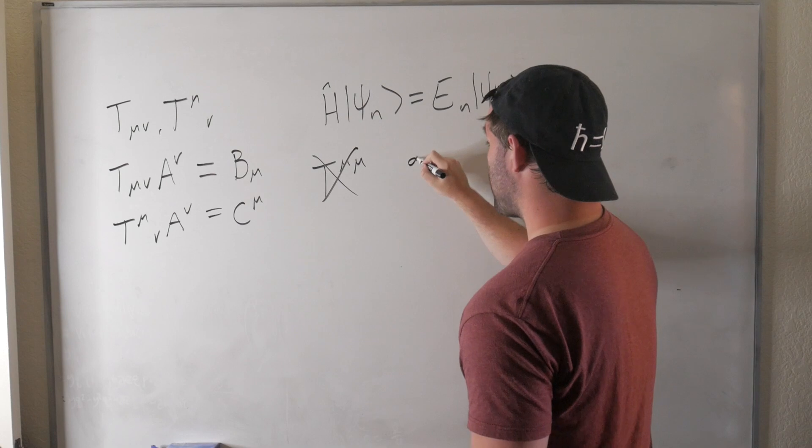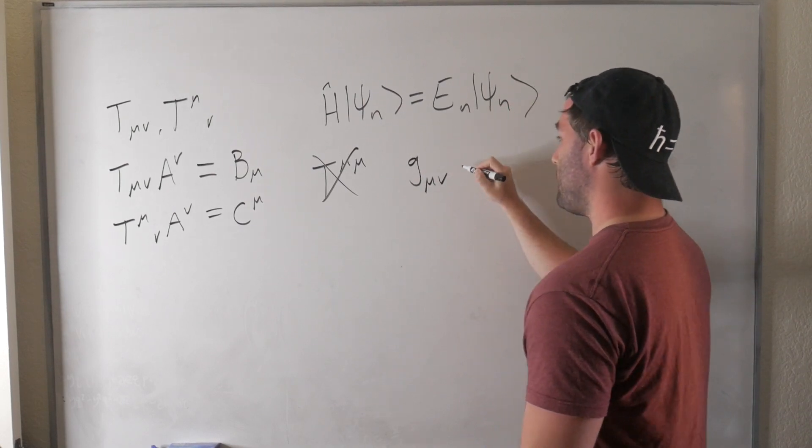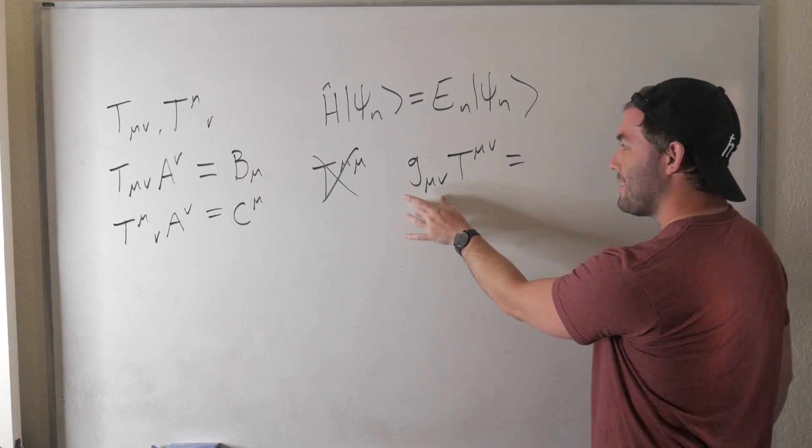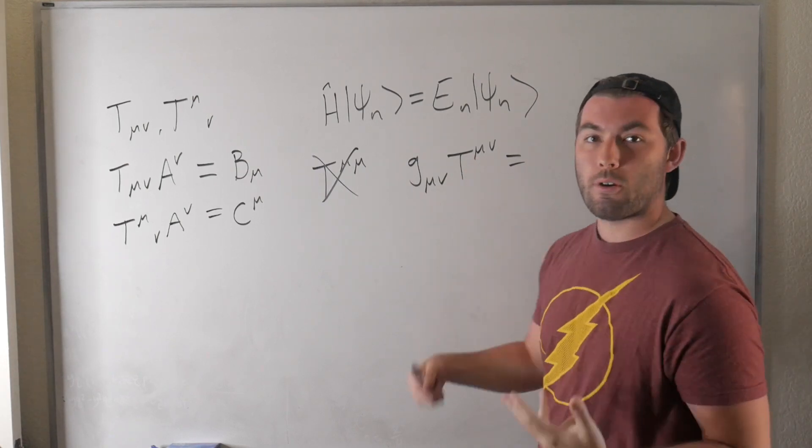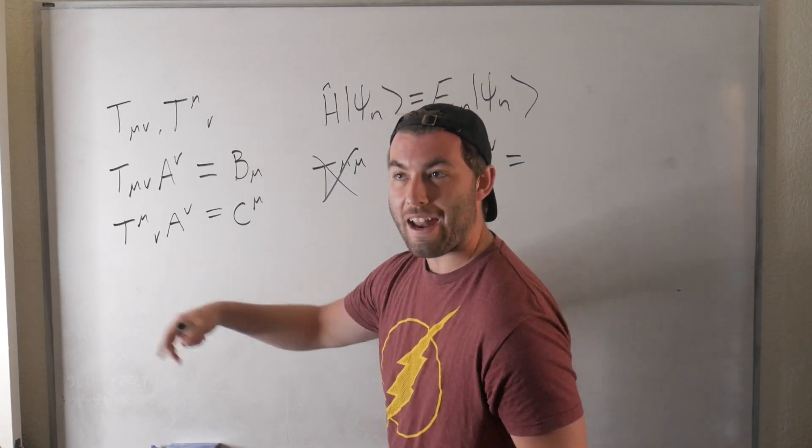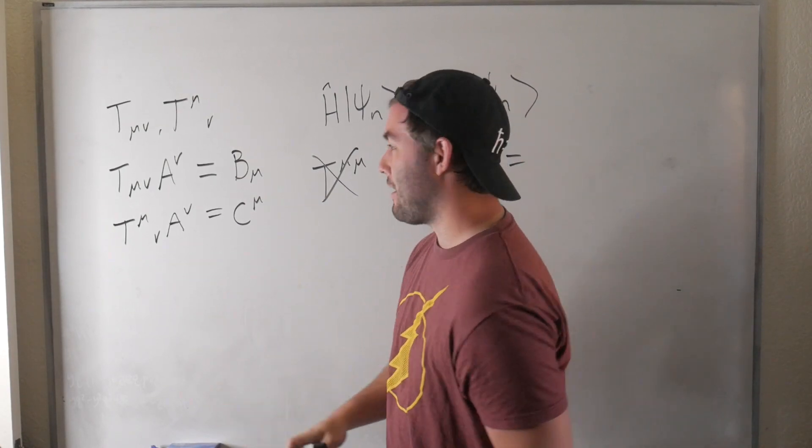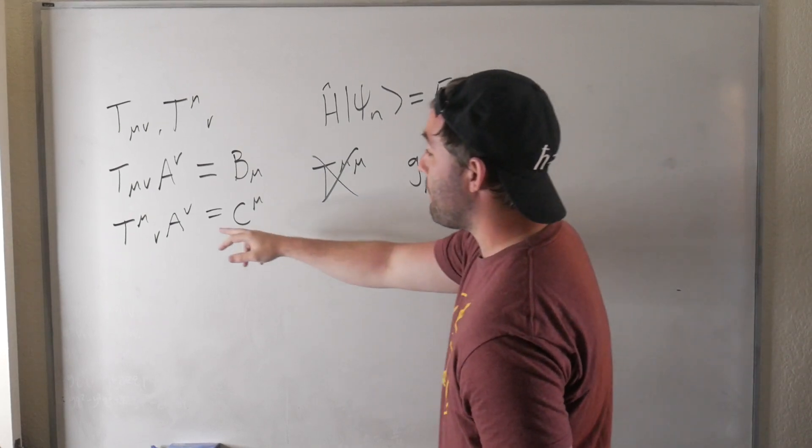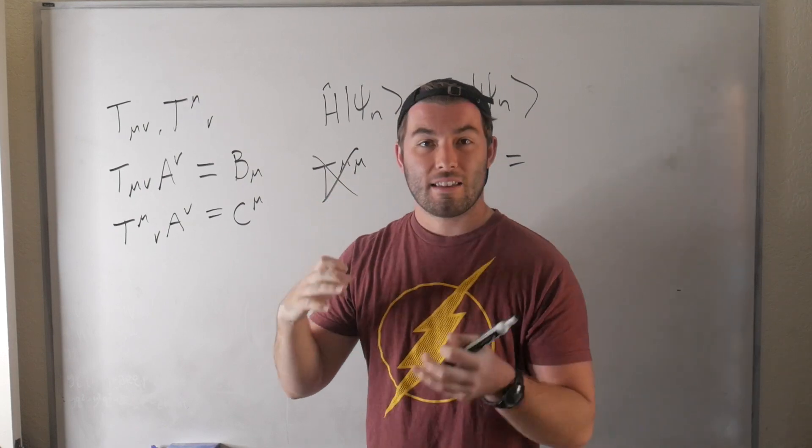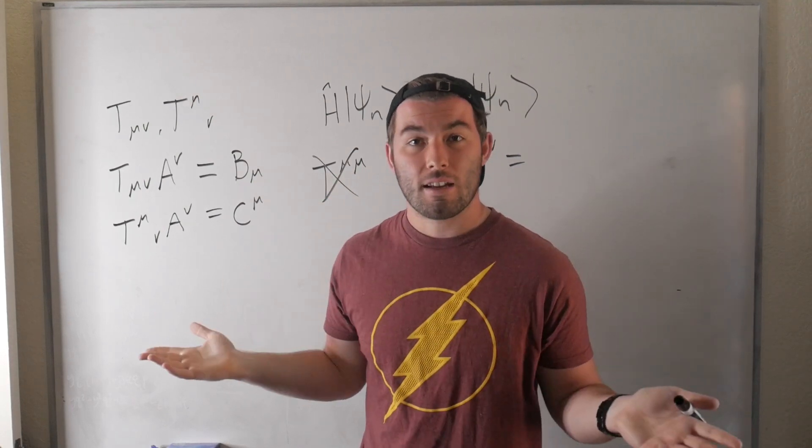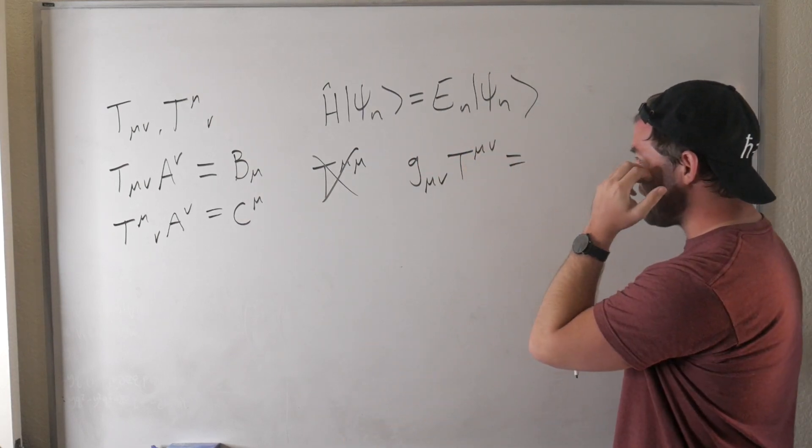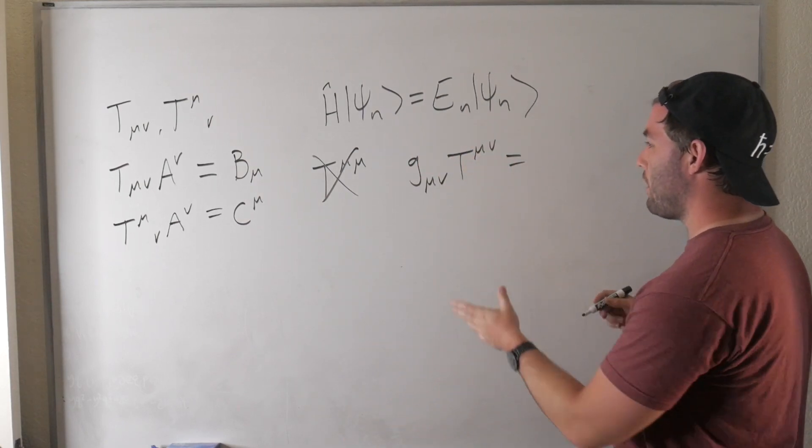Instead, what you would do is you would act on it with the metric tensor, g^μν T_μν, and what the role of the metric tensor is, is it converts these other doubly covariant or doubly contravariant tensors into linear operators, where now it finally makes sense to do things like calculate eigenvalue eigenvectors. But if we were to naively try to do that right off the bat by just representing this tensor on a given basis and pretending like it was a linear operator, we would just get a nonsensical answer. It wouldn't really mean anything, and it wouldn't be an invariant quantity.